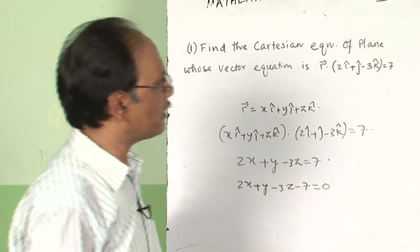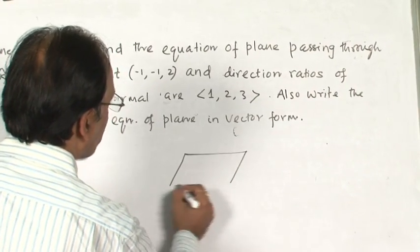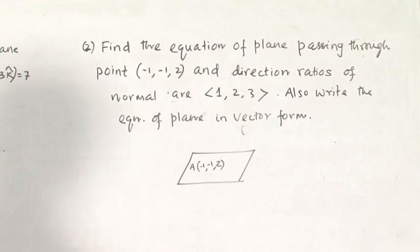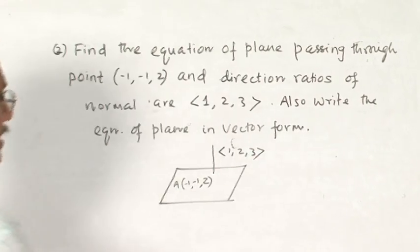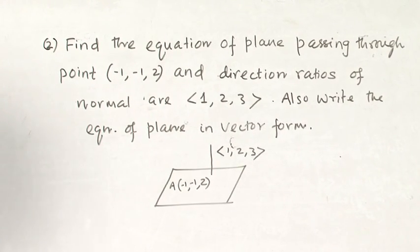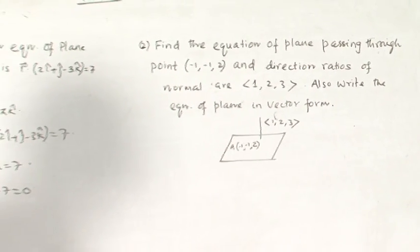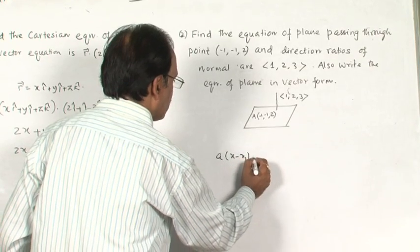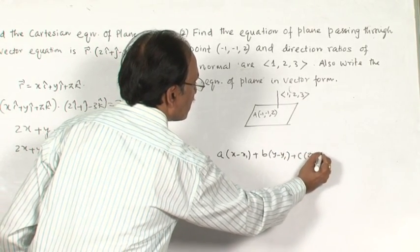Now come to question number 2. Here you are asked to find the equation of the plane passing through the point (−1, −1, 2) with given direction ratios of the normal. Recall the formula: a(x − x₁) + b(y − y₁) + c(z − z₁) = 0. We will use the same formula with the given values.